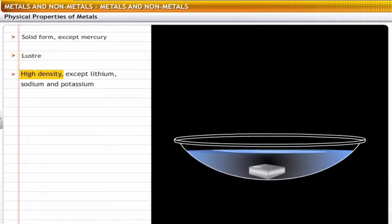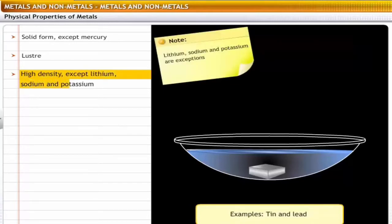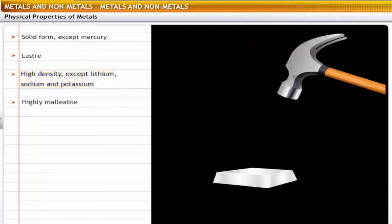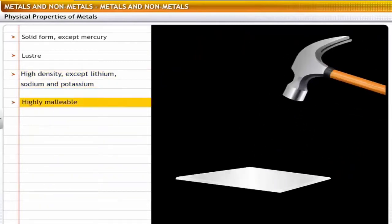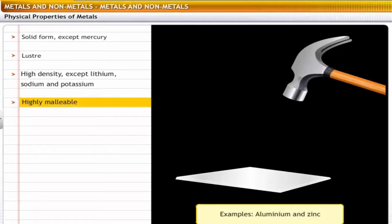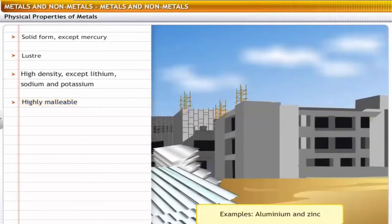Metals have high densities and therefore tend to sink in water. For example, tin and lead sink in water. Exceptions are lithium, sodium and potassium, whose density is lower than that of water and hence they do not sink. Metals are highly malleable and can be beaten into thin sheets. For example, aluminium and zinc can be rolled into thin sheets. This property makes them suitable for use in various industries like construction and manufacturing.